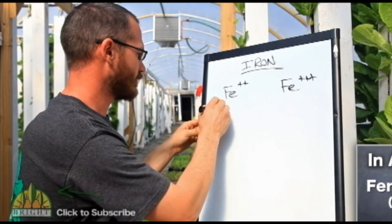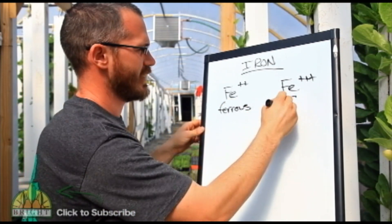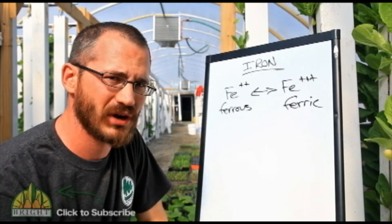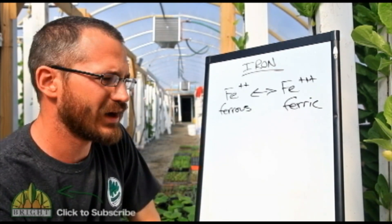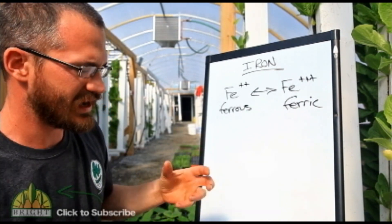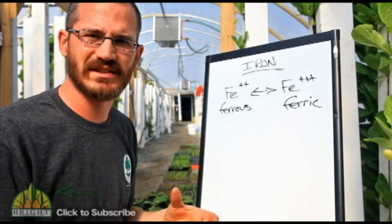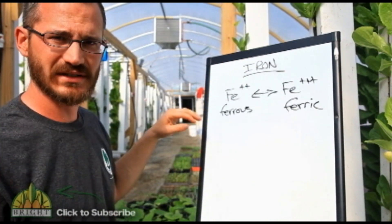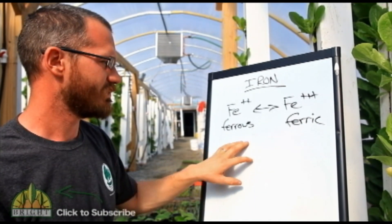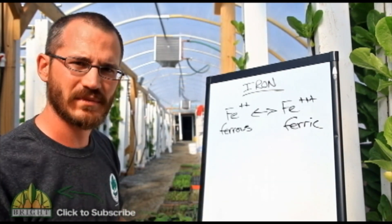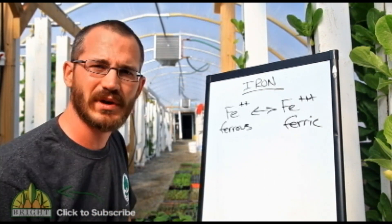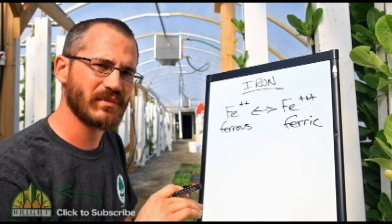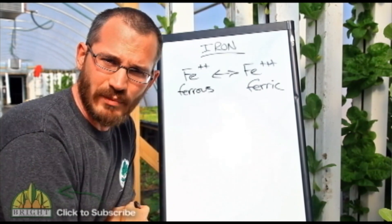Ferrous iron and ferric iron are trading spots pretty often depending on temperature, depending on pH, and basically different states of the system. We need to understand how these different types of iron come into the system and are removed, become soluble and become insoluble, so that we can treat our plants with appropriate amounts of iron. Ferrous iron is soluble iron.